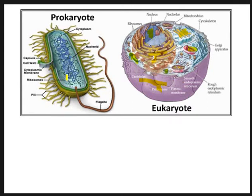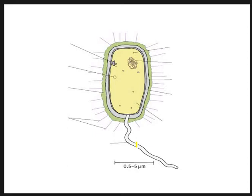Here's a general diagram of a prokaryotic cell. We can see a scale bar to give us an idea of how small it is. This is a general diagram, so it shows all the structures you may find on a bacterium. Not all bacteria will have all the structures - some will have the tail-like structure here, some won't; some will have this very outer layer, some won't, depending on where they live and what they do.